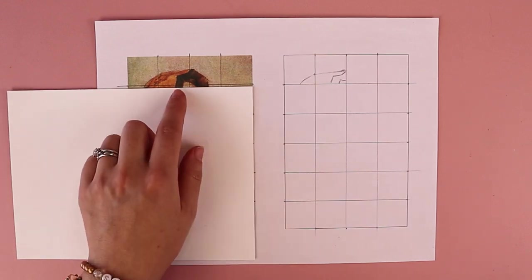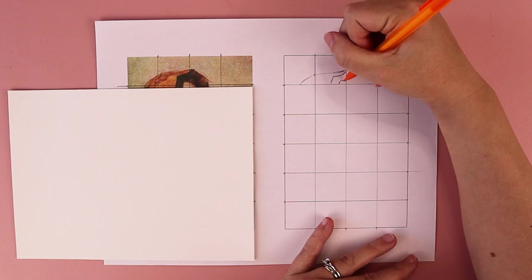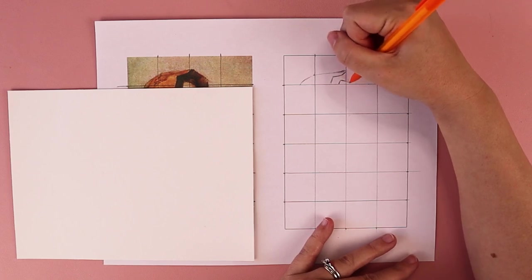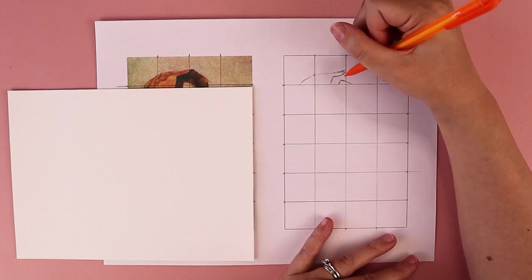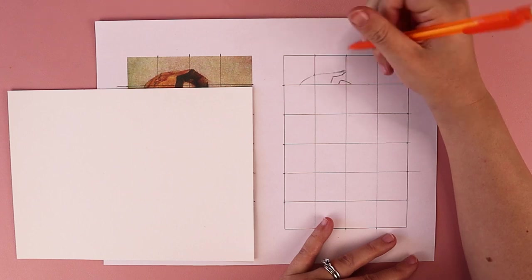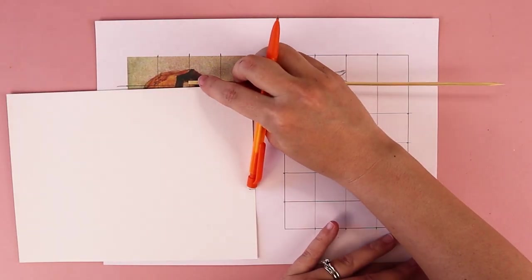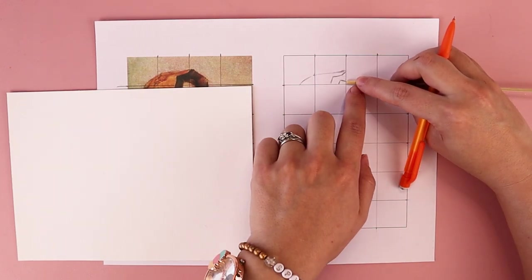So basically, you're looking at each square one by one and you are drawing what you see in that space. I feel like sometimes when we look at the picture all by itself, it can look really intimidating. But when we break it down into smaller pieces, it doesn't seem as hard. It makes it a little bit more simple.